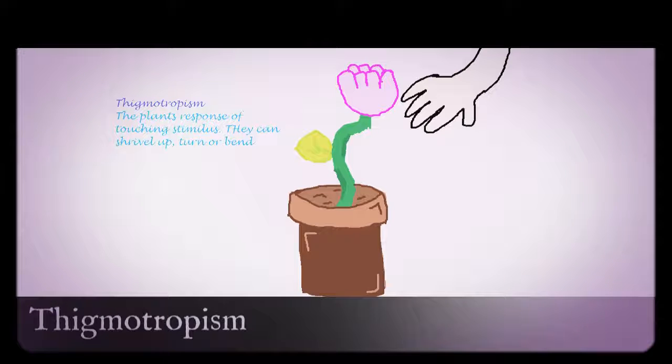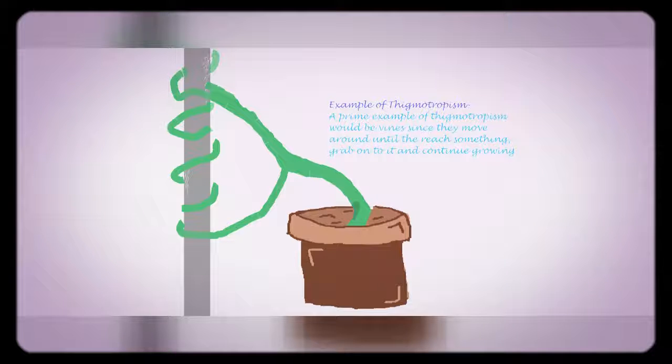Thermotropism is the plant's response to touching stimulus. They can travel up, turn, or bend. A prime example are vines. They move around until they reach something, then can follow around and continue growing.